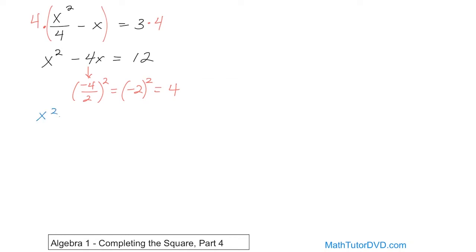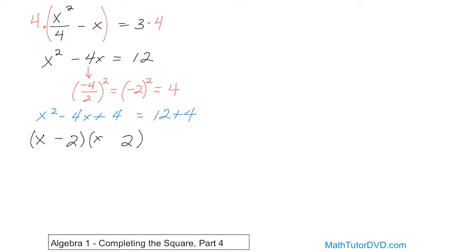So we have x squared minus 4x, we add 4 to the left and also add 4 to the right. We suspect we should get a perfect square here, so let's go ahead and try to factor it. x times x — what times what gives you 4? Two times 2 looks like it's going to work. We have a negative sign in the middle, so we'll need negatives. On the right-hand side, we're going to get 16.